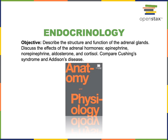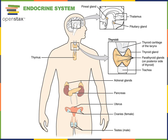In this video I will describe the structure and function of the adrenal glands, discuss the effects of the adrenal hormones epinephrine, norepinephrine, aldosterone, and cortisol, and compare Cushing's syndrome and Addison's disease. The adrenal glands are a pair of pyramid-shaped organs located superior to the kidneys, also known as the suprarenal glands — 'supra' meaning superior and 'renal' referring to kidney.